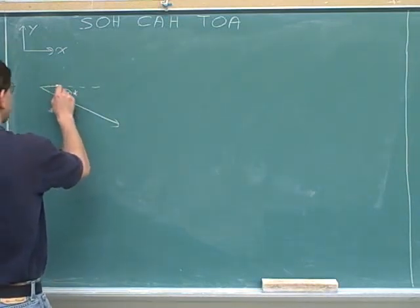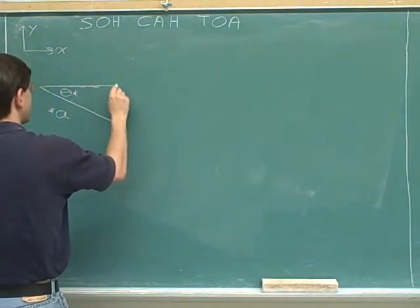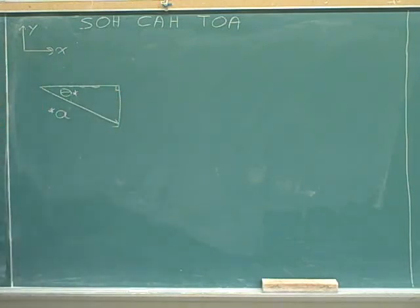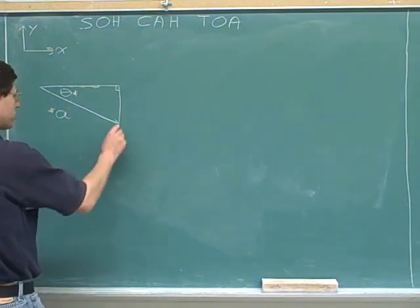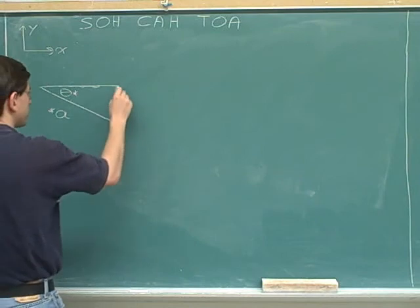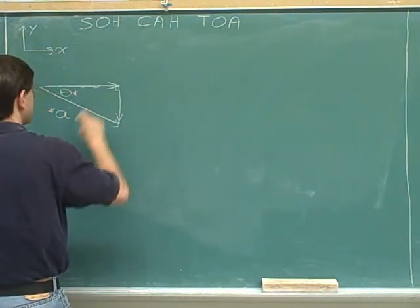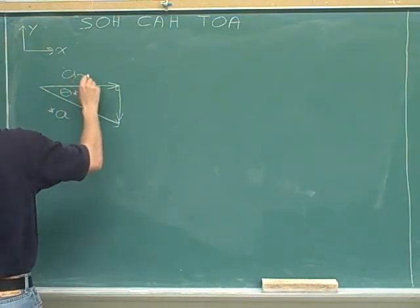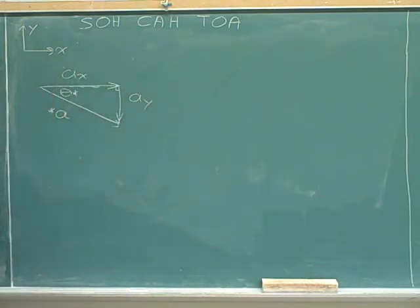To break this into components, we have to draw the right triangle that uses the overall vector as its hypotenuse, and where the legs are parallel to the axes, and that includes, hopefully, the angle that we were given. Now, arrows on the legs. The overall vector was pointing down and to the right, so we have components pointing down and to the right. This side would be a sub x, and the vertical side would be a sub y because the y direction is the vertical direction.